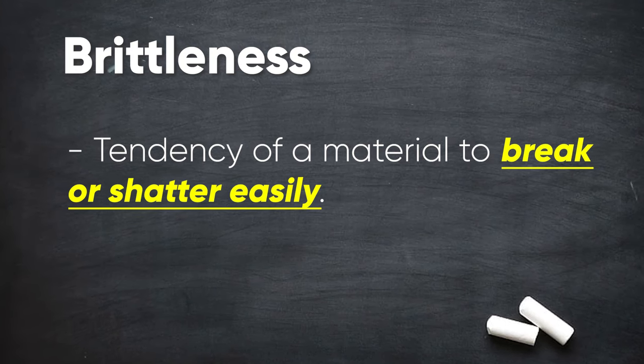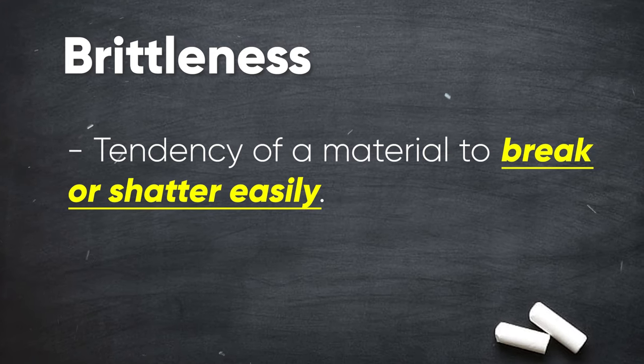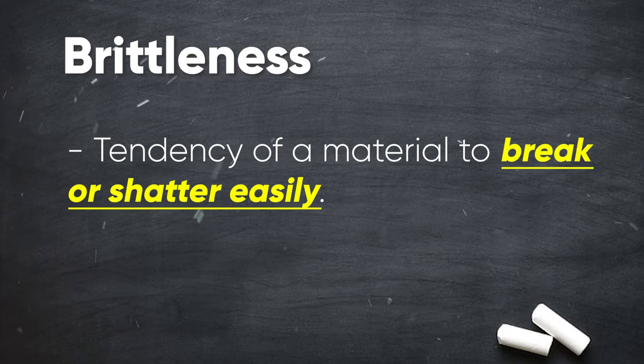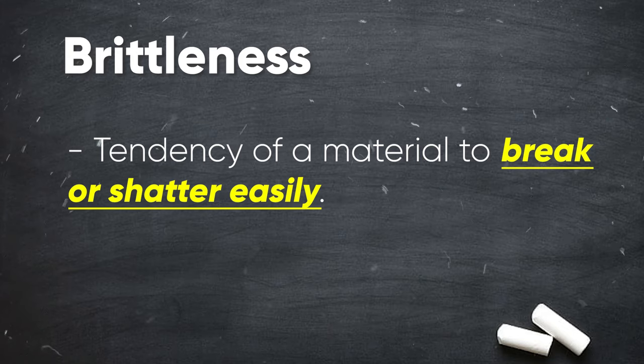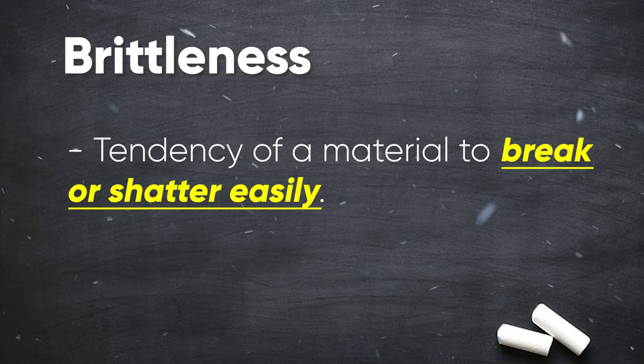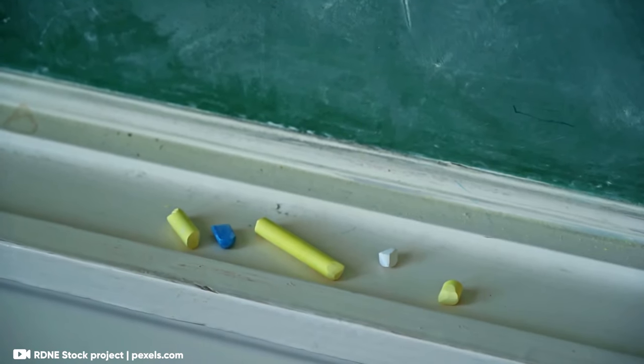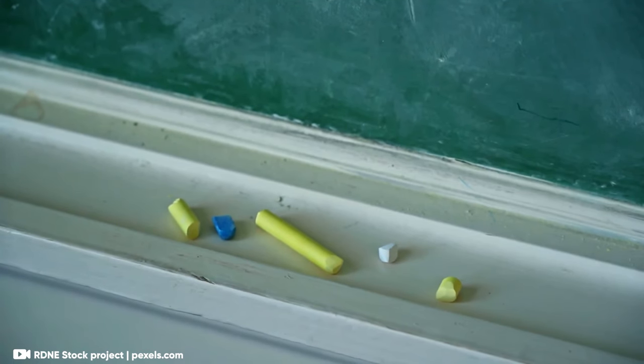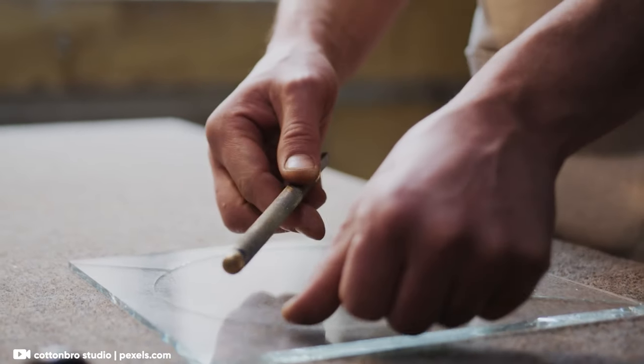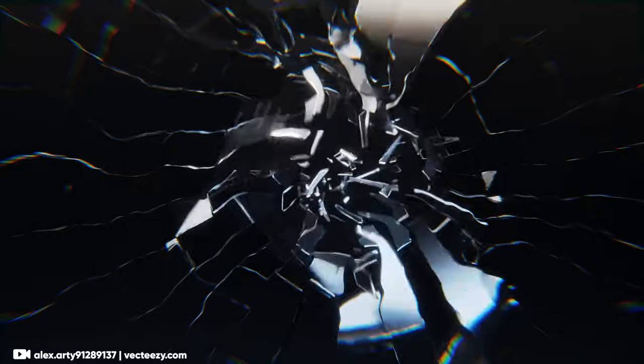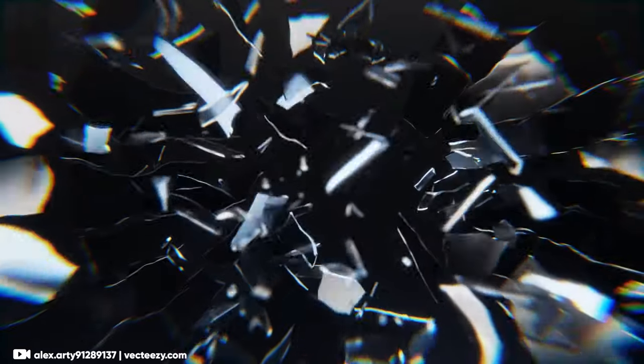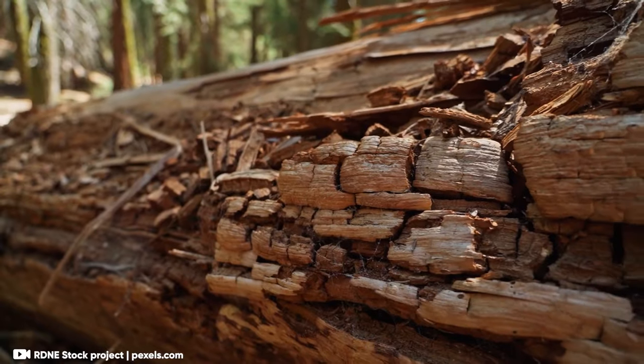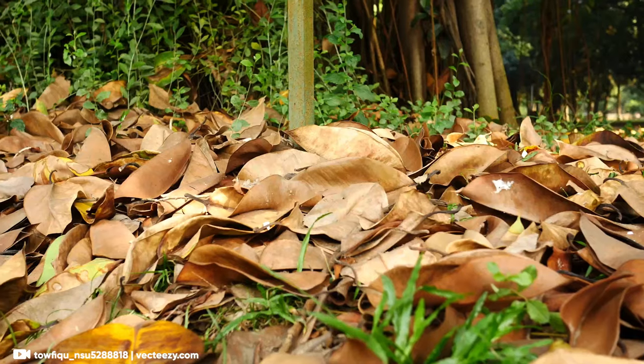Next is brittleness, the tendency of a material to break or shatter easily. Materials that can break or shatter easily are described as brittle materials or simply called brittle. Chalk is a great example. It's hard but also brittle, so it snaps when you apply too much force. Another good example is glass. It is solid but can easily break or shatter. So glass is brittle. Dry wood also becomes brittle, as well as dried leaves.